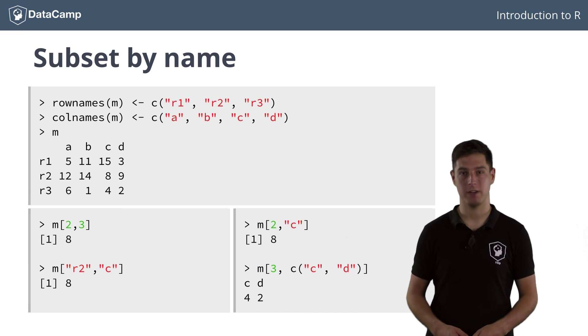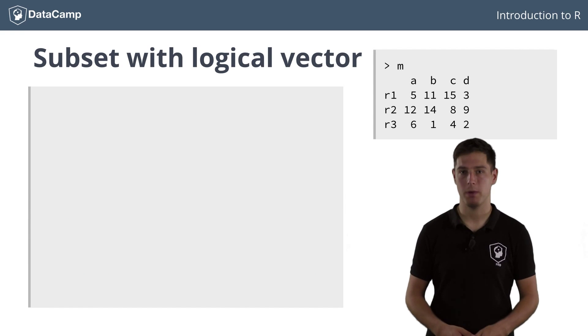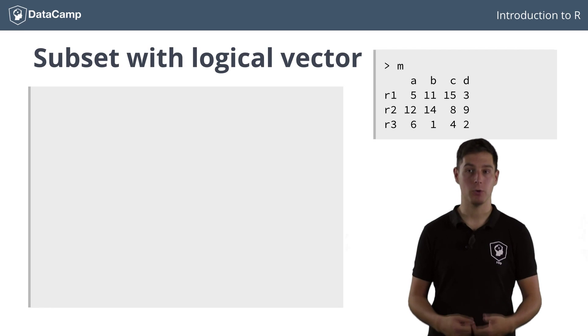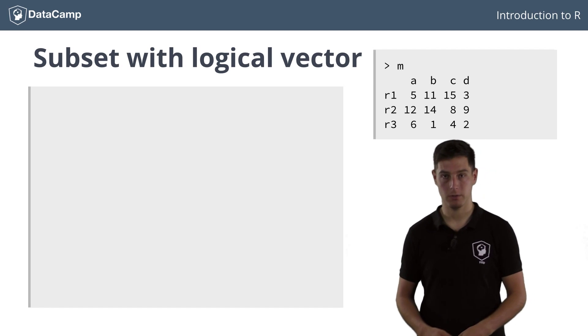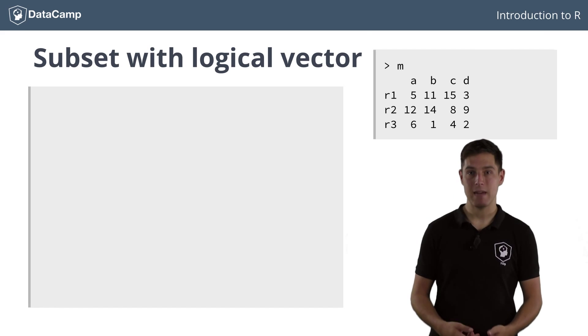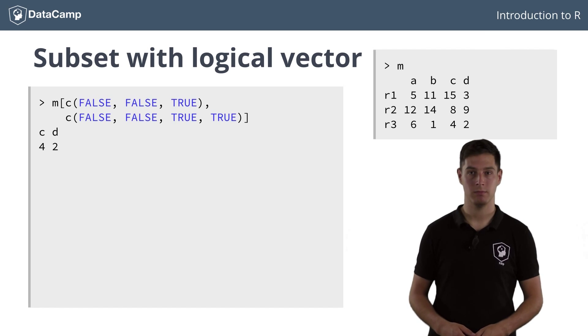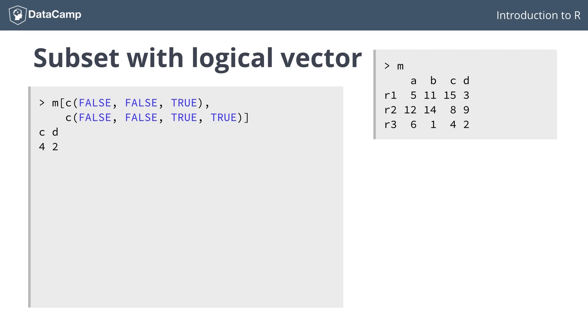Finally, you can also use logical vectors. Again, the same rules apply. Rows and columns corresponding to a TRUE are kept, while those corresponding to a FALSE are left out. To select the same elements as in the previous call, you can use this command. The rules of vector recycling also apply here. Suppose that you only pass a vector of length 2 to perform a selection on the columns. The column selection vector gets recycled to FALSE, TRUE, FALSE and TRUE, giving the same result as before.